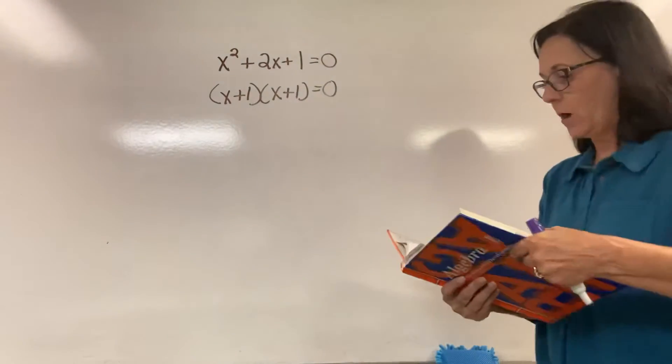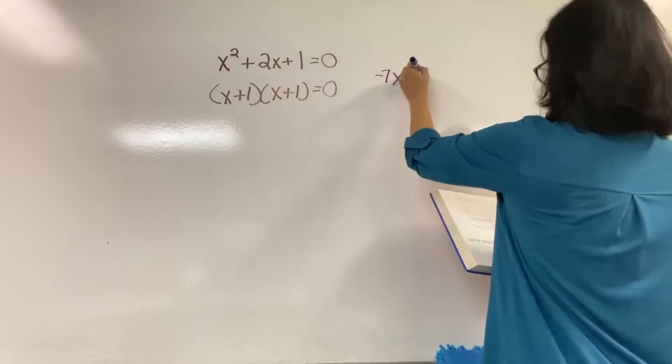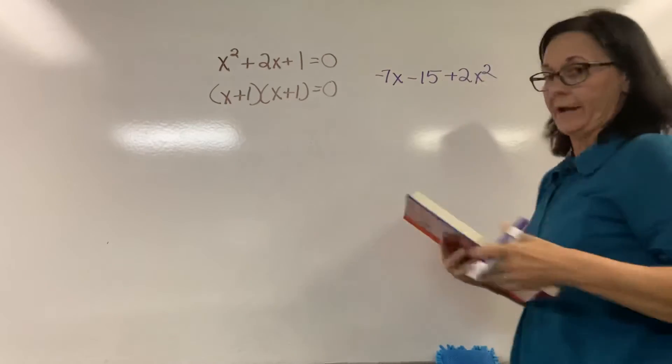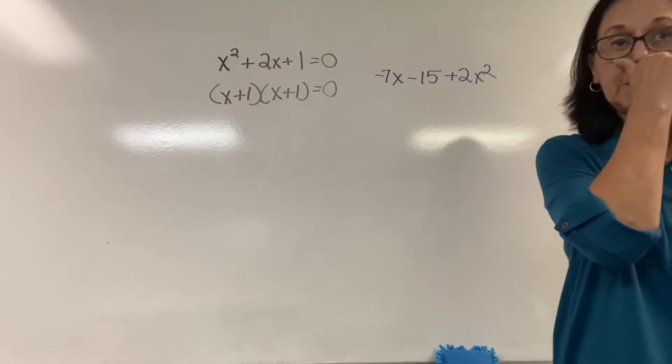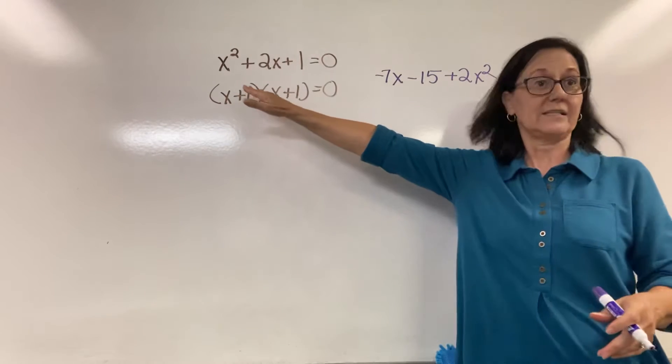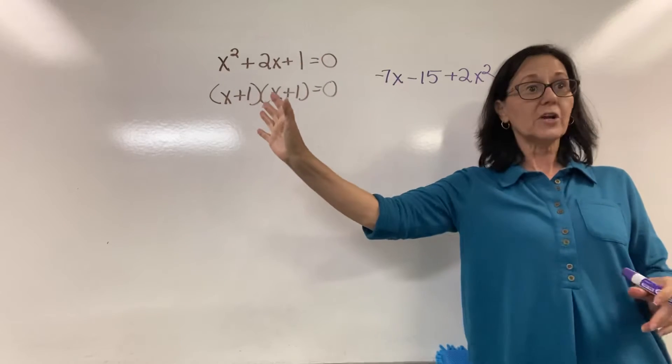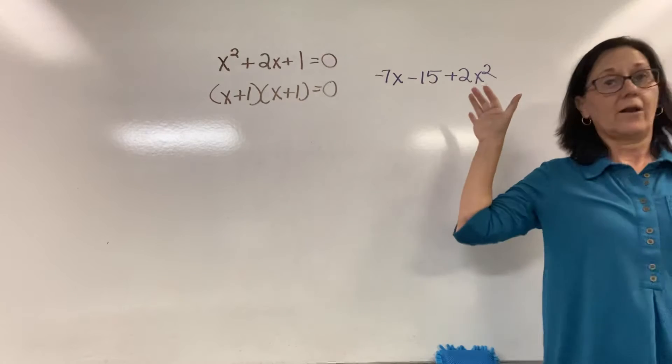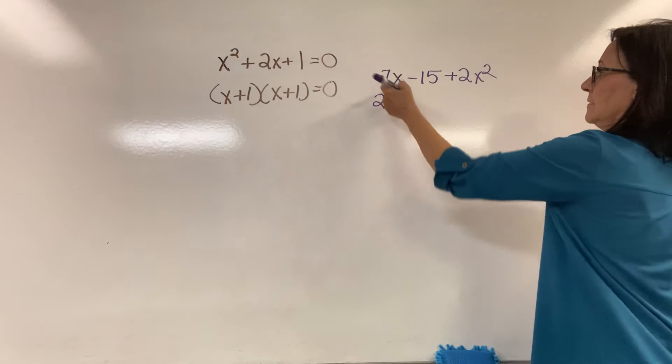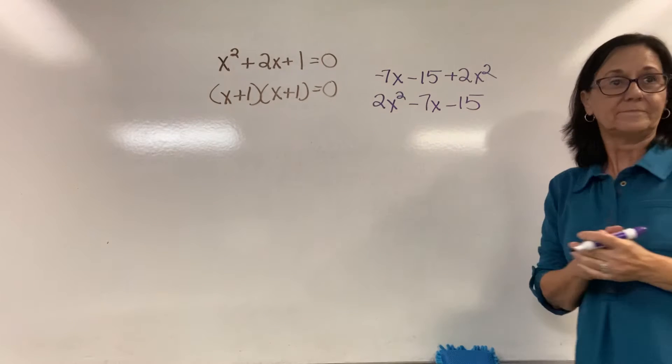Look at Example 1 on page 459. It's negative 7x minus 15 plus 2x squared. The first thing we have to do is write this in proper form. Our x squared term has to be first, our x in the middle, and our constant last. 2x squared minus 7x minus 15. Correct.